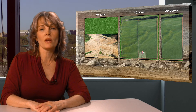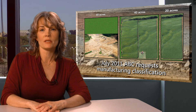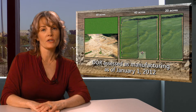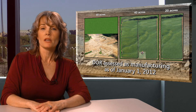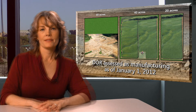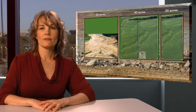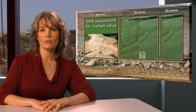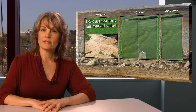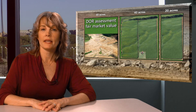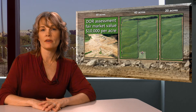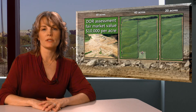In July of 2011, the property owner, Company ABC, requests assessment classification as manufacturing. The Department of Revenue determines that the 40-acre mining site will be assessed as manufacturing property for the January 1, 2012 assessment because it was used as a mining operation as of that date. In 2012, the Department will assess the 40 acres of land with mining at fair market value, looking for sales of subject and comparable properties. There are sales of similar land containing frac sand deposits in the market area that support a unit value of $10,000 per acre, for an approximate total assessment of $400,000.